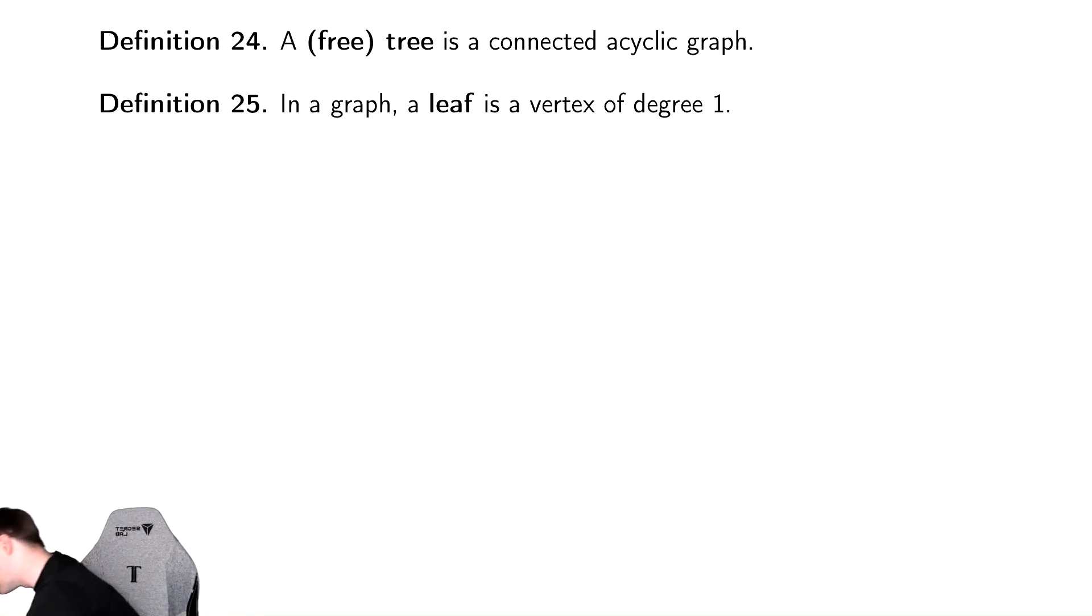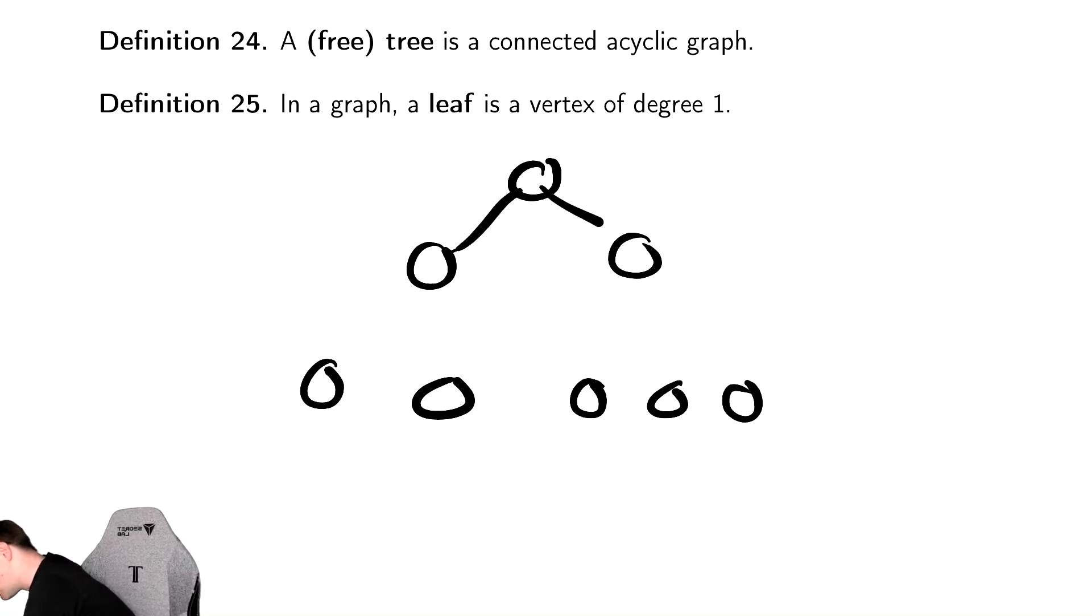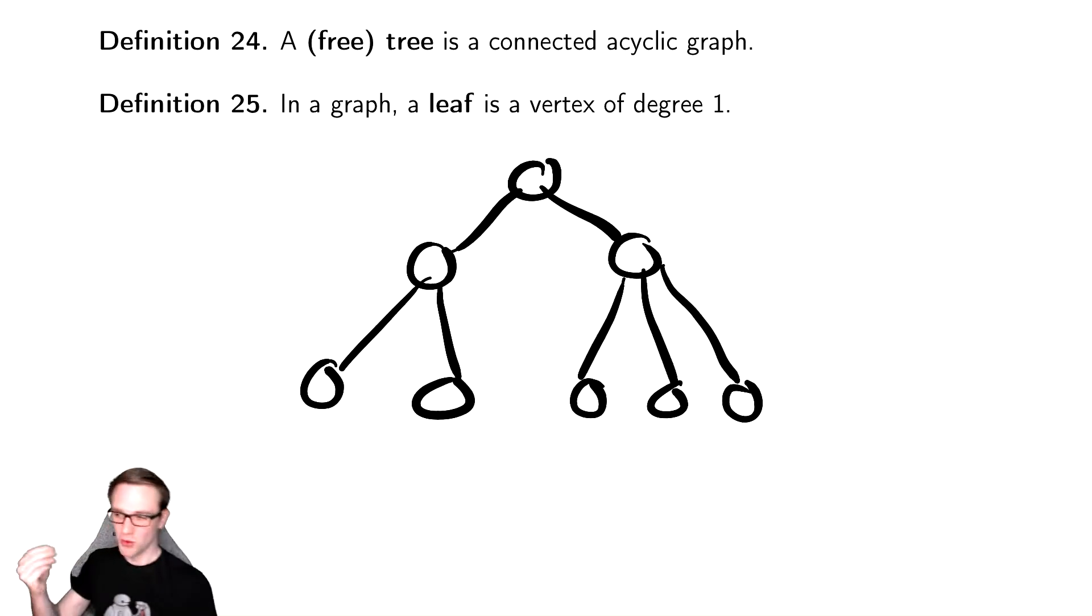So here's an example of a tree, more common to what you might have seen, where I draw in this sort of manner where there is a root-looking vertex, and there are something at the bottom which are called leaves. Leaves are vertices that have only one edge, so they have degree one.